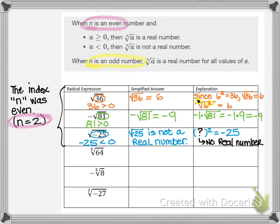Now let's look at what happens when our index is an odd number — we're going to look at some cube roots. The first one is the cube root of 64, which equals 4. Since 4 cubed equals 64, the cube root of 64 is 4. We can also write this as the cube root of 4 cubed since 4 cubed is equivalent to 64. When your index matches the power on your radicand the answer is just the base, which is 4.